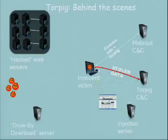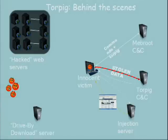Whenever the victim goes to one of those financial institutions, TorPig connects to the injection server. The injection server gives it a customized phishing page for that particular financial institution through a process I'll detail later. It looks exactly like the real pages — the PayPal one and others look like they were prepared by professional people, and I'll show you examples.